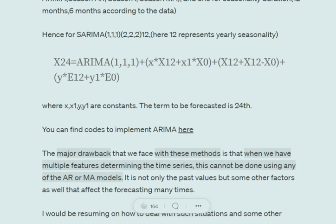Now the moving average part B, Y into E12 plus Y1 into E0. Again makes sense, E12 is the error term while estimating the X12 element and E0 is the error term that was error made during estimating the X0 element.